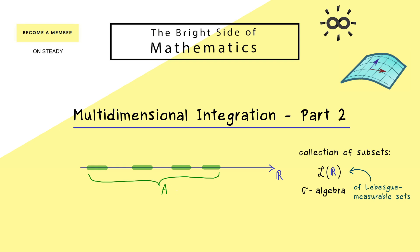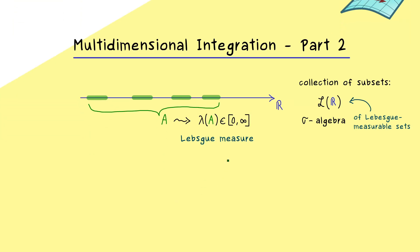So if this is the set A, the Lebesgue measure is denoted by lambda of A. And this is always a number between 0 and infinity, where infinity as a symbol is also allowed. In other words, the Lebesgue measure generalizes the concept of measuring lengths in one dimension.